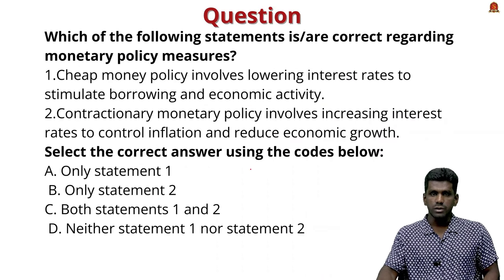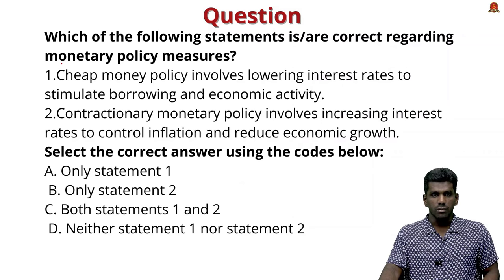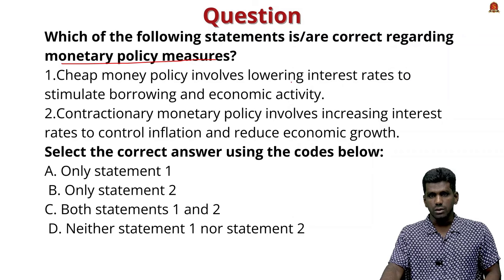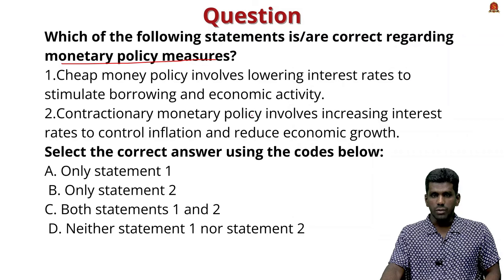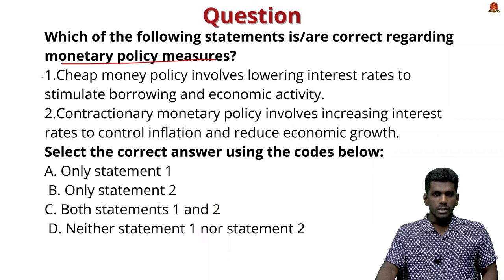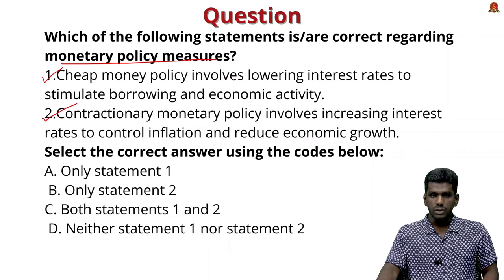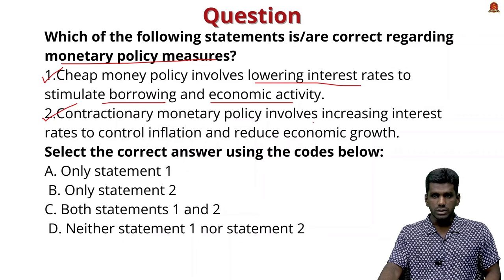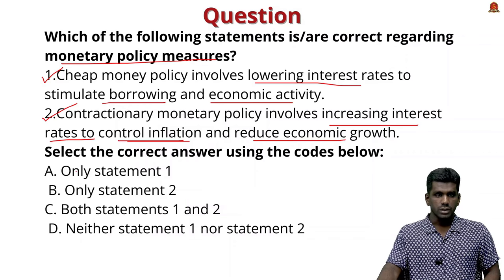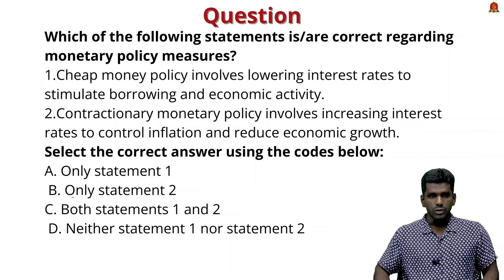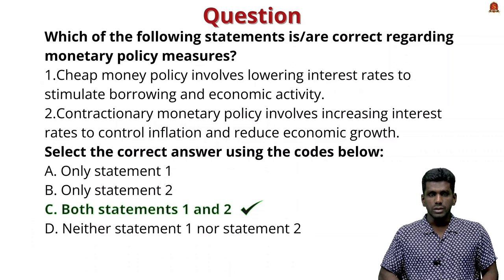An MCQ related to this topic: which statement is correct regarding monetary policy measures? Statement 1 — cheap money policy involves lowering interest rates to stimulate borrowing and economic activity — is correct. Statement 2 — contractionary monetary policy involves increasing interest rates to control inflation and reduce economic growth — is also correct. So the correct answer is option C, both 1 and 2.